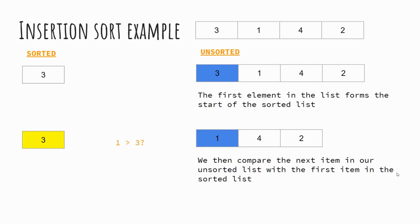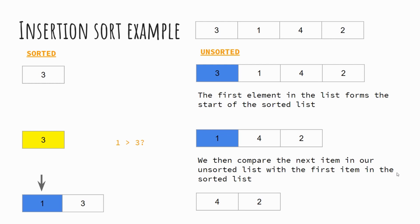We then look at the next element in our unsorted list — in this case, the number one. We make a comparison to see if one is greater than or less than three. One is not greater than three, and therefore one gets inserted before the number three. Our sorted list is now one and three, whilst our unsorted list remains as four and two.